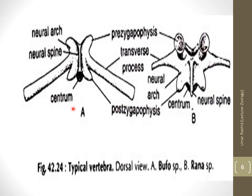In this slide, we see the typical vertebra of Bufo and Rana species of frogs. In the dorsal view of the Bufo vertebra, we can identify the neural spine, pre-zygapophysis and post-zygapophysis. The term 'zygo' means yoke, because the zygapophyses link two vertebrae together. These are projections of the vertebra that serve the purpose of fitting with an adjacent vertebra. The actual region of contact is called the articular facet.